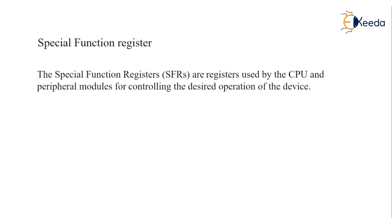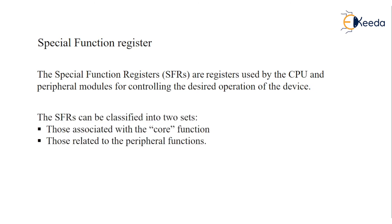SFRs are 8 bits, since data memory is 8 bits. The number of locations in the file registers set aside for SFRs depends on the pin number and the peripherals. SFRs are classified into two sets: those associated with core functions and those related to peripheral functions.